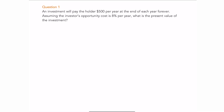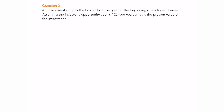In this first question, an investment will pay the holder $500 per year at the end of each year forever — so this is an ordinary perpetuity. The opportunity cost is 8% per year and we're looking for the present value. We'll use the present value of a perpetuity formula: take the payment and divide it by the discount rate. You should get a present value of $6,250.